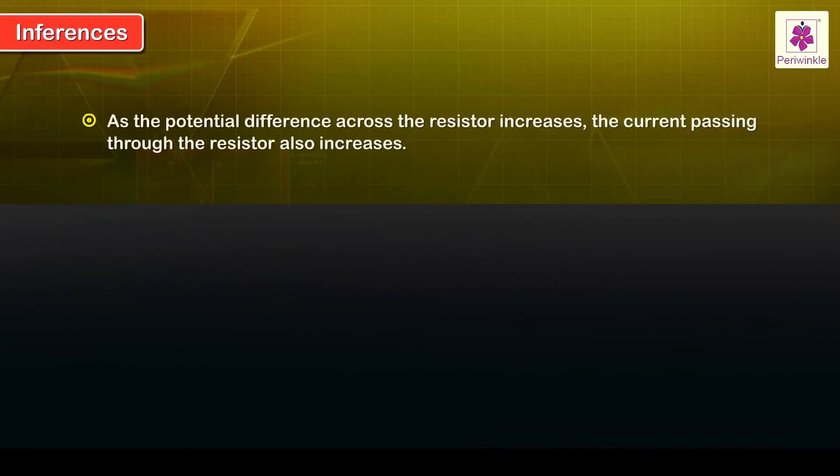Inferences: As the potential difference across the resistor increases, the current passing through the resistor also increases. Within the experimental errors, the ratio remains constant.